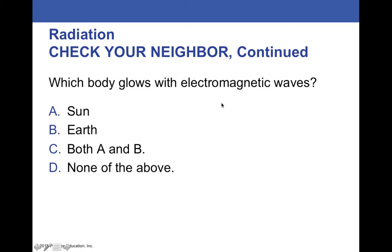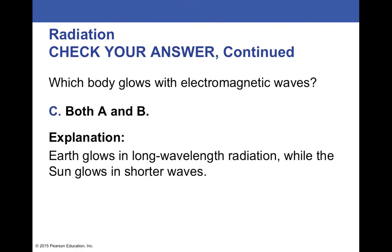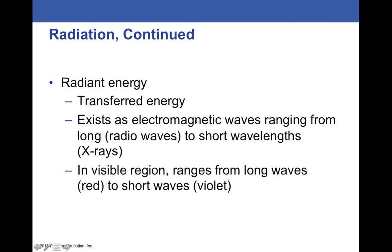Which body glows with electromagnetic waves? So, go ahead and think what's the best answer. C, both A and B. So, both the Sun and the Earth are emitting electromagnetic because the Earth is not completely cold. It has some warmth to it. It's going to be radiating back out into space. And the Sun is obviously emitting radiation because we can see it as visible light.